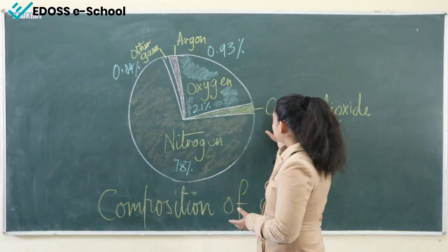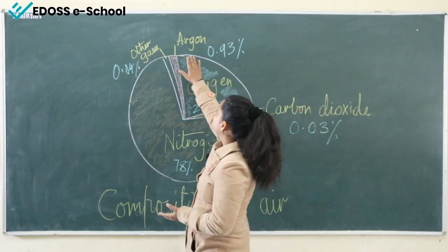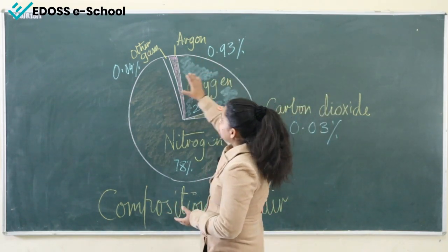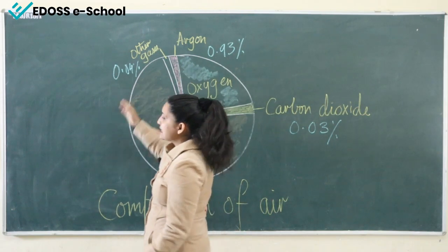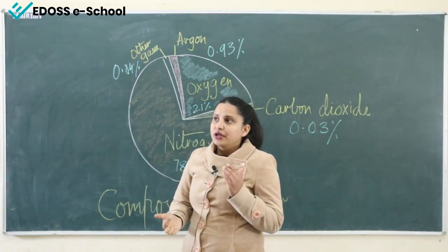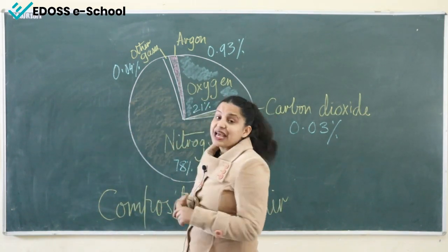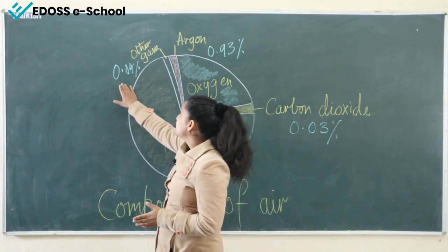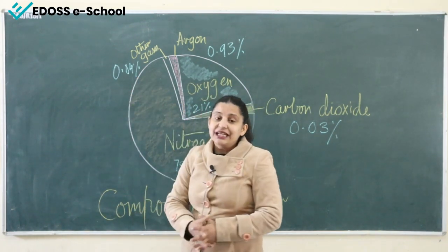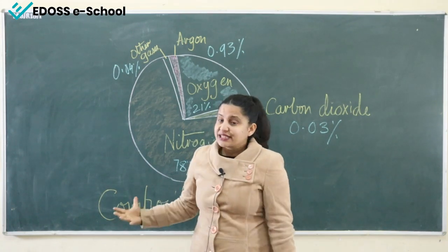After nitrogen, oxygen, and carbon dioxide, another important component is argon, that is 0.93%, and other gases like helium, ozone, hydrogen, water vapors, and of course dust particles — that is 0.04% in our atmosphere.